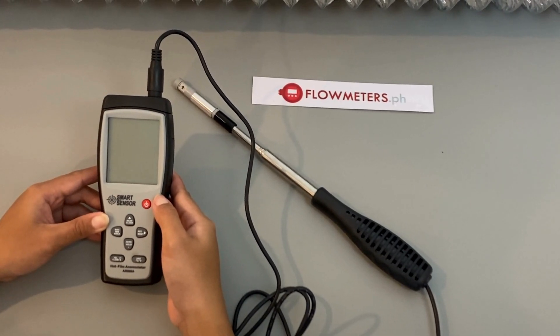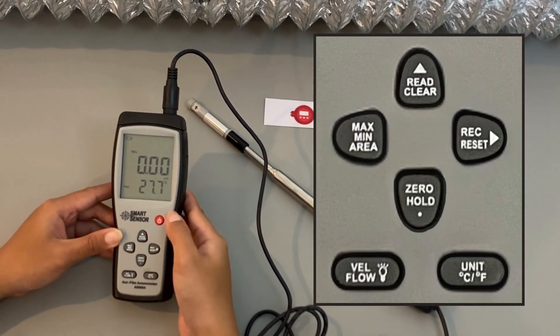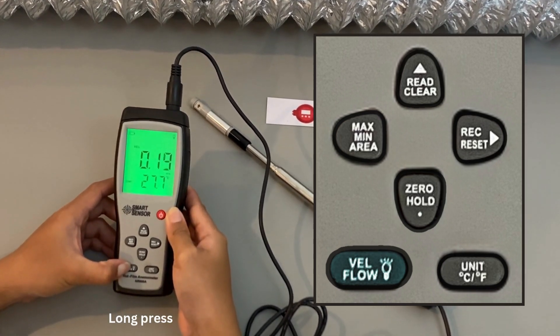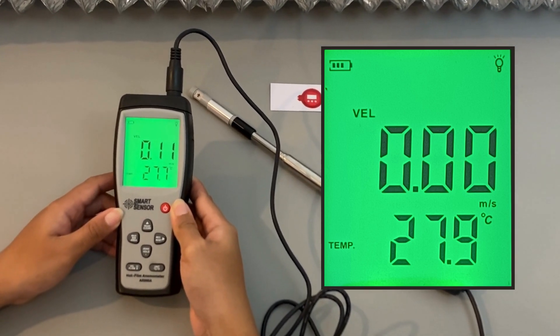To make the display easier to read, press and hold the bulb button to turn the backlight on or off. As you can see, this is the default display.